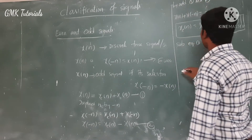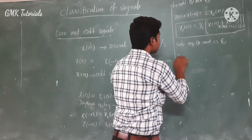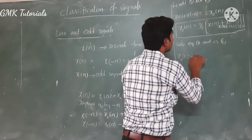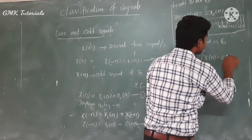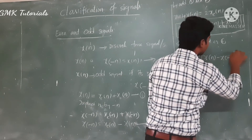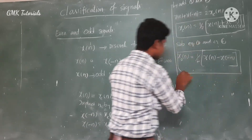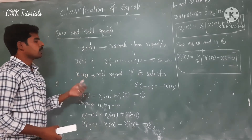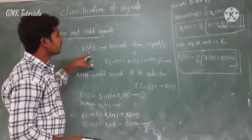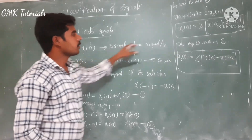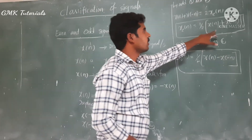By adding equations 1 and 2 we get the even component; by subtracting equation 1 and equation 2 we get the odd component. So x_o of n is equal to one half of x of n minus x of minus n. This is the condition for the even component and the odd component.